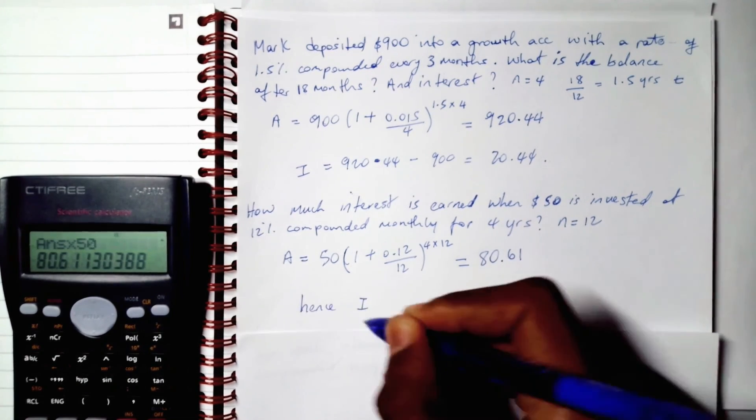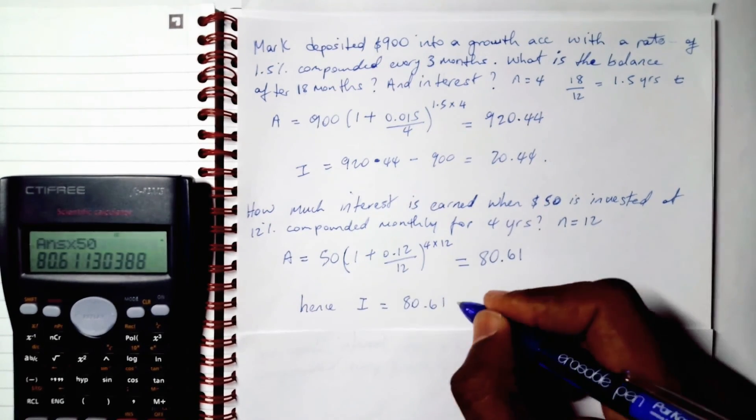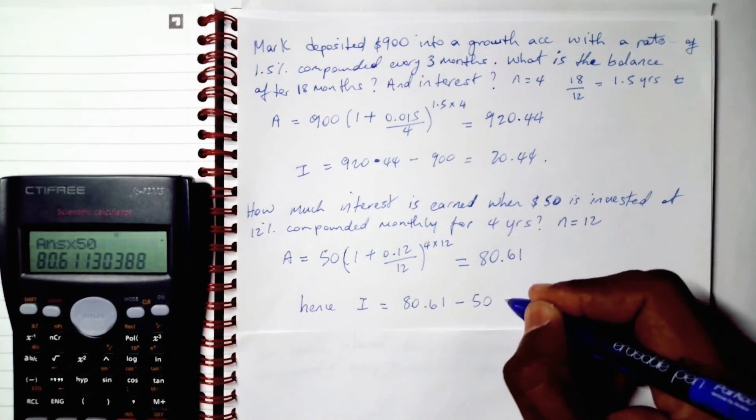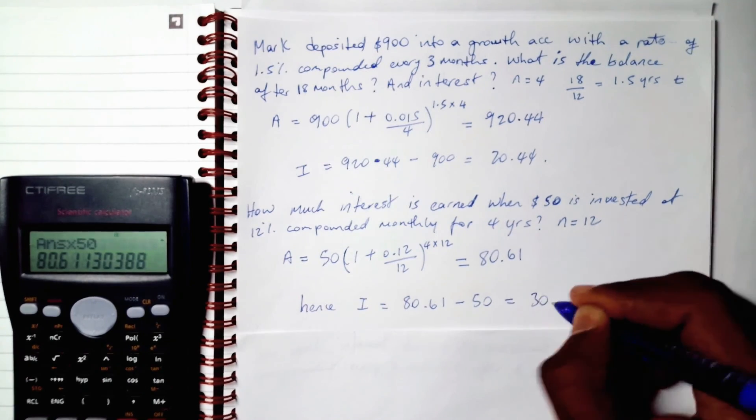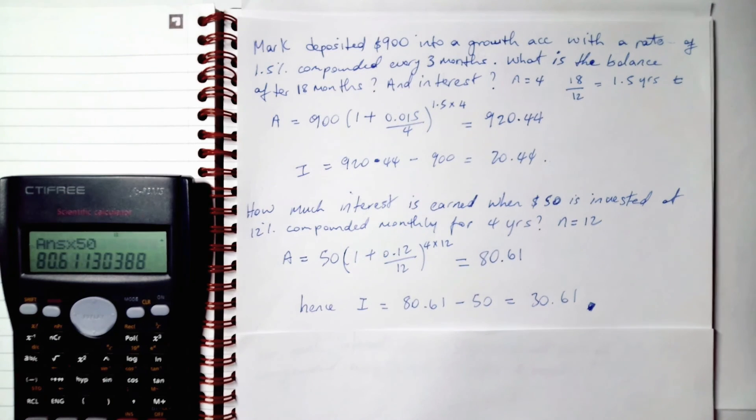Hence, I is equal to 80.61 minus 50, which is equal to 30.61. And that's it. I'll see you in the next episode.